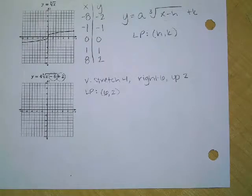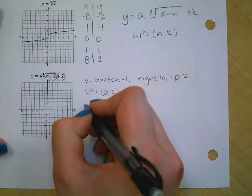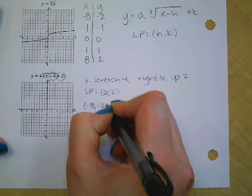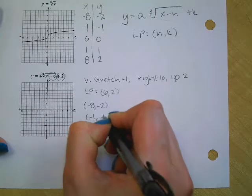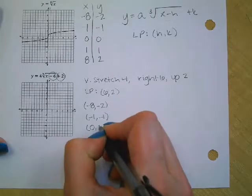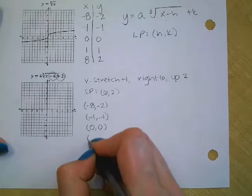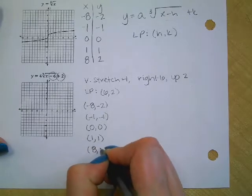Let's go ahead and make the chart so that we can find the other points. So I've got negative 8, negative 2, negative 1, negative 1, 0, 0, 1, 1, 8, 2.